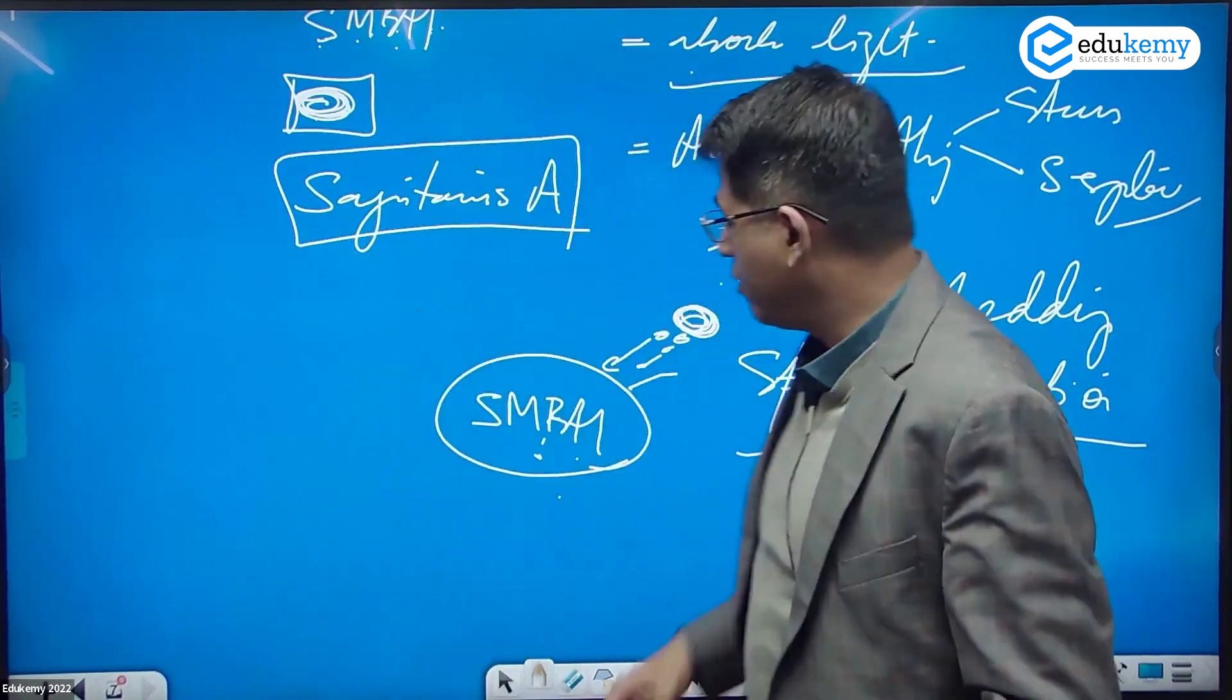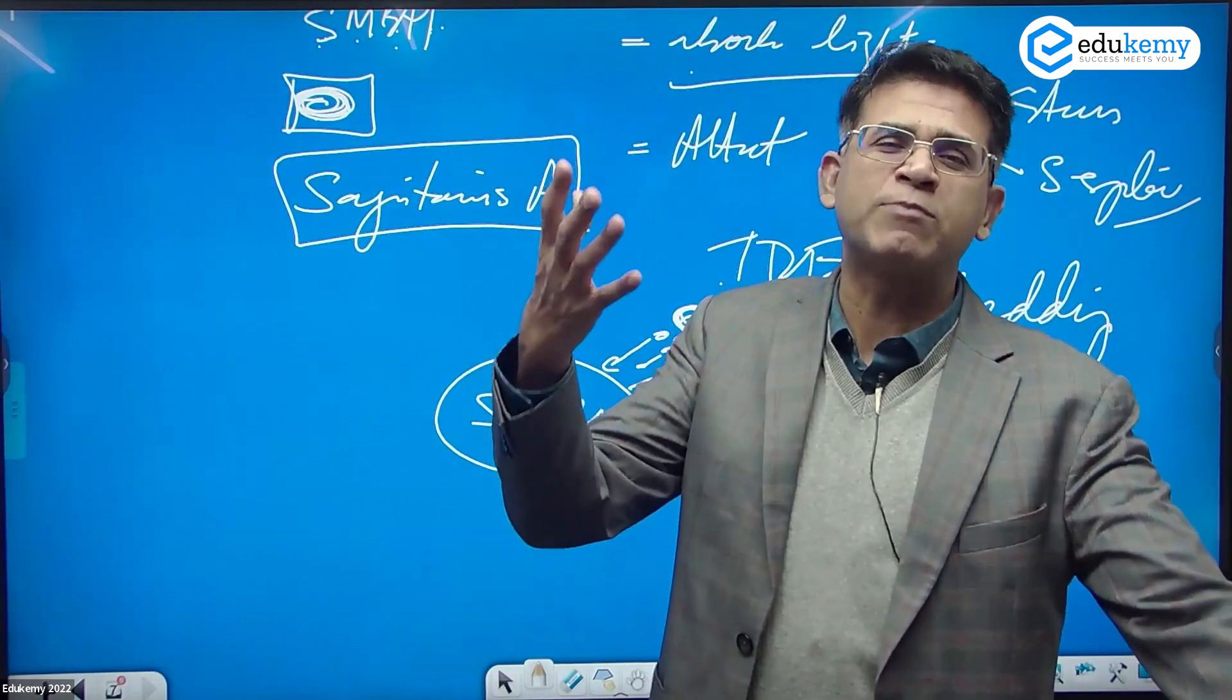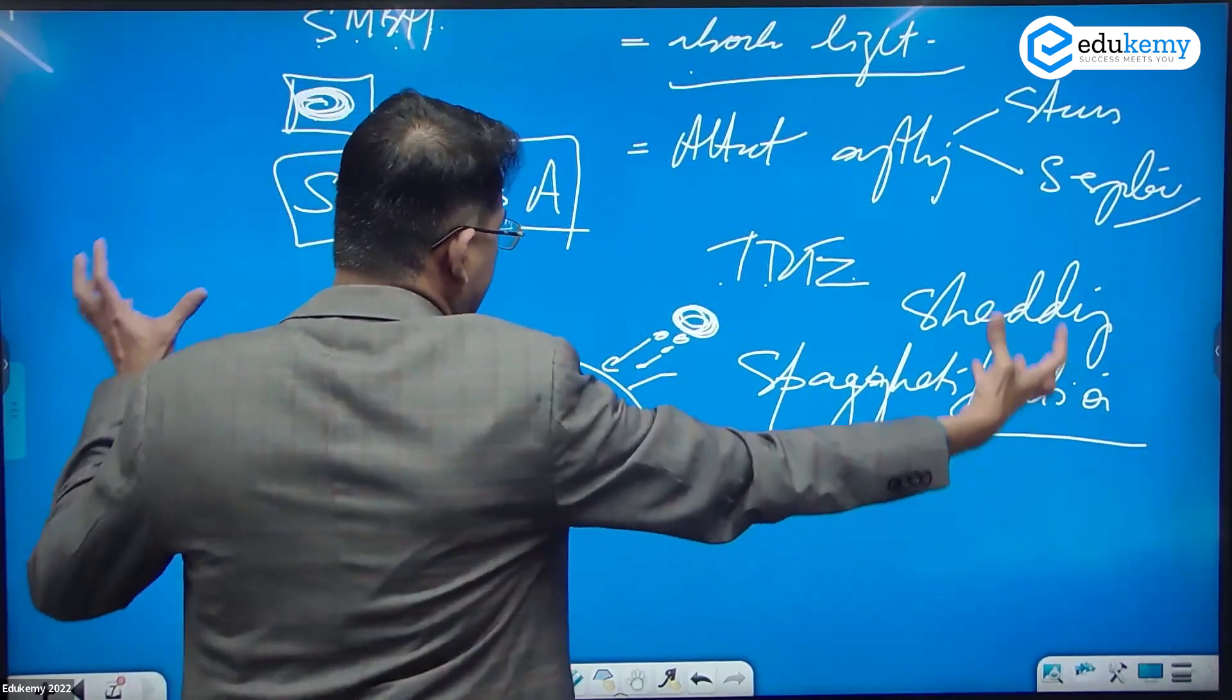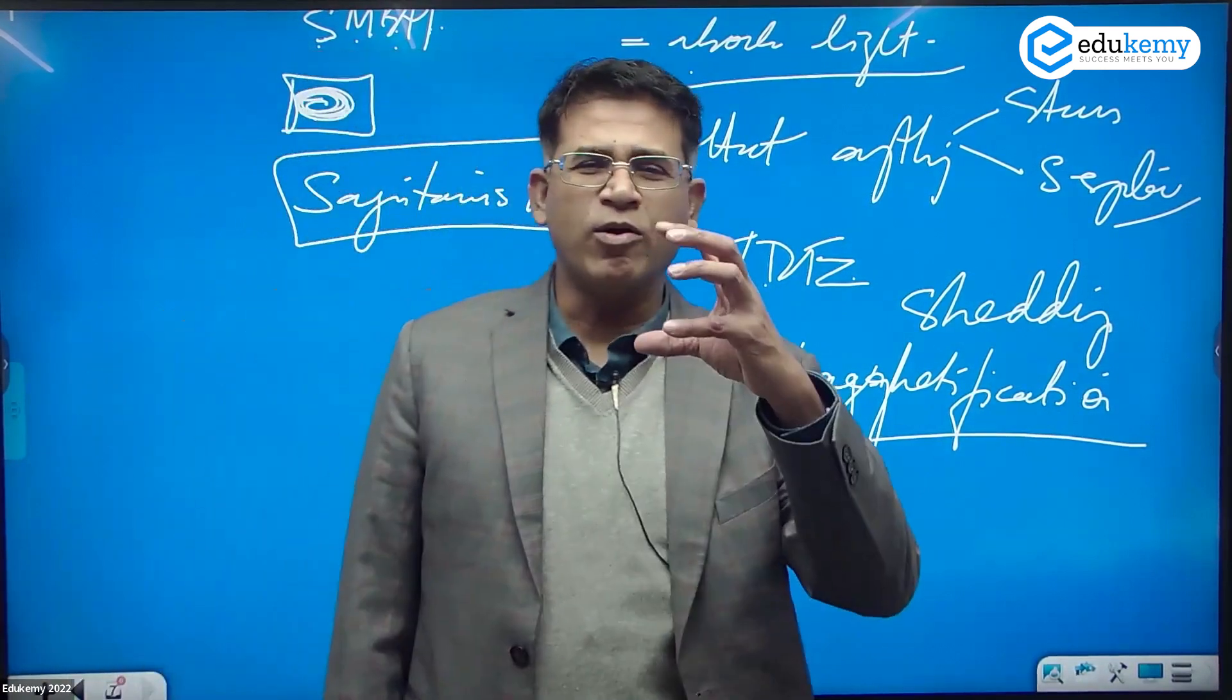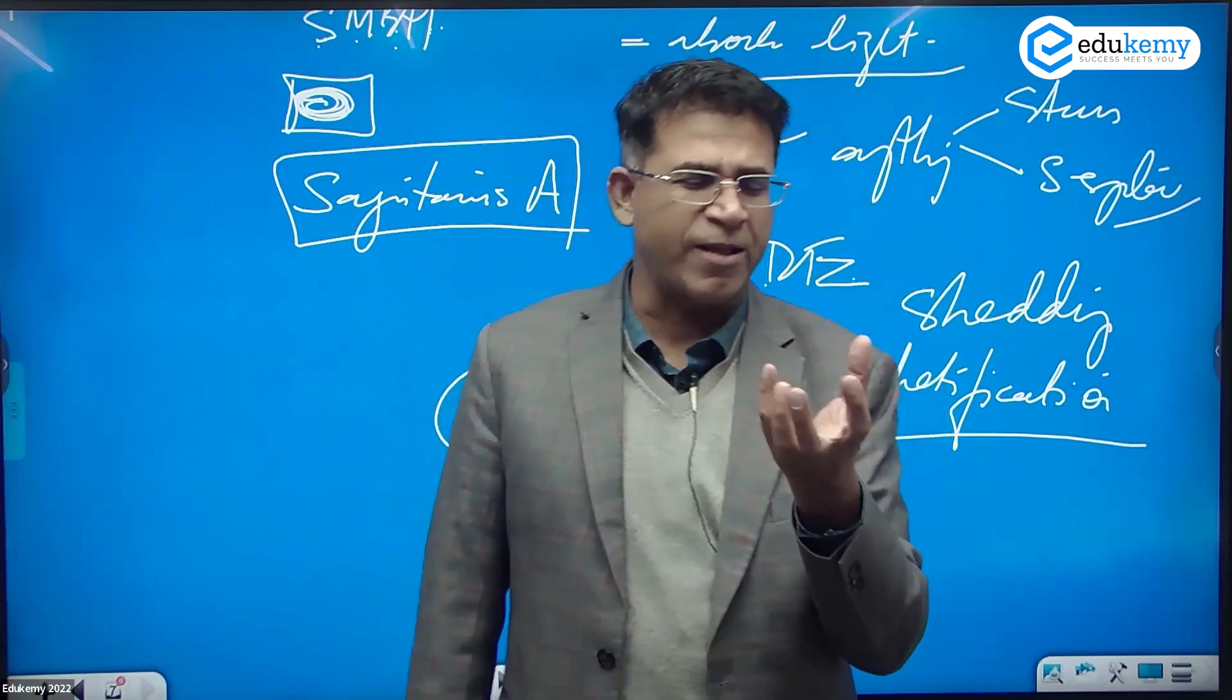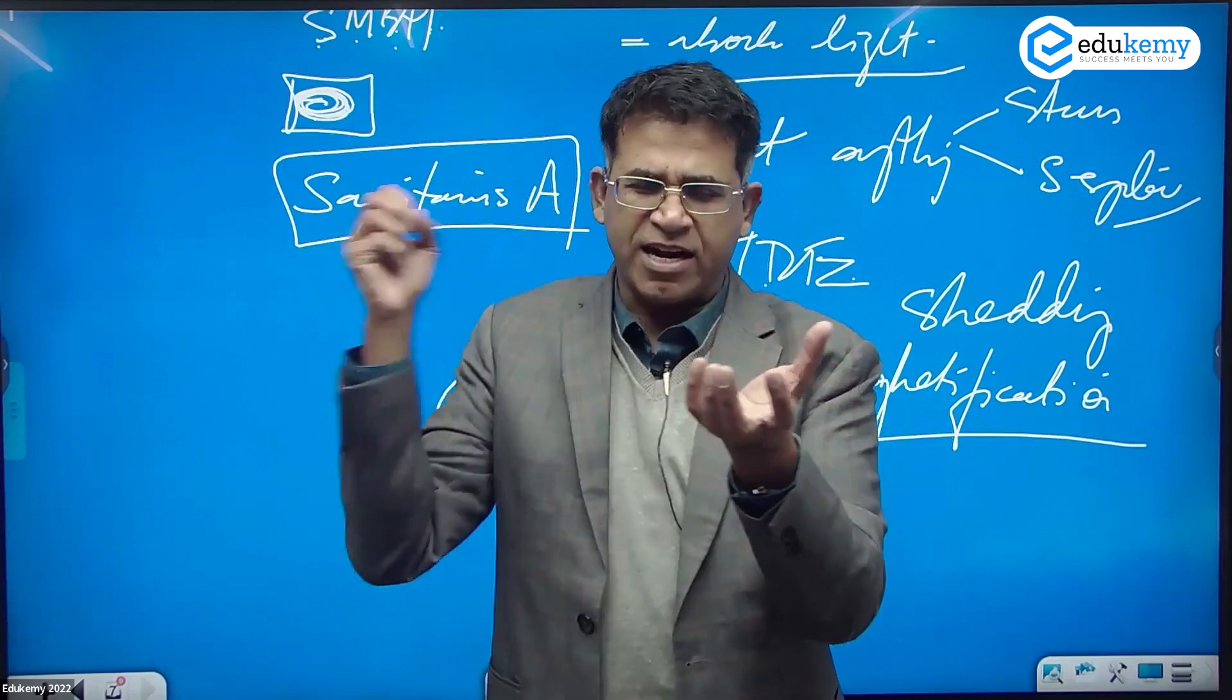There are black holes which are even more powerful than supermassive black holes - sometimes 20 to 30 million times more powerful. In that case, rather than a star, an entire galaxy can collapse inside. You can't see the black hole, but you know it was a star once upon a time. How do I know there's a black hole? Once in a while, a star comes near and collapses inside it, and there's a streak of light - a sudden flash of light.